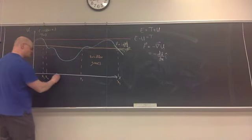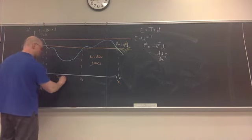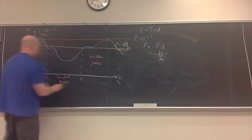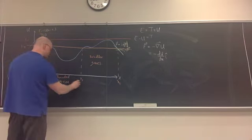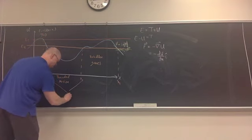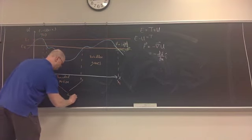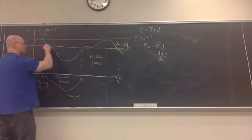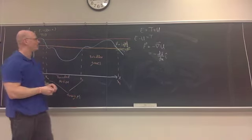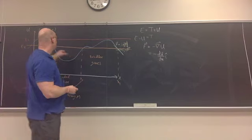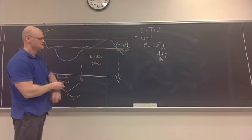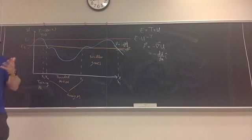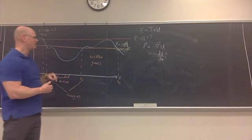This type of motion — bounded between X2 and X3 — is what we call bounded motion, where X2 and X3 are both turning points. In this case, my particle oscillates back and forth, basically under simple harmonic motion, forever. Because since there are no non-conservative forces, it's not losing energy, so the total energy must remain fixed.